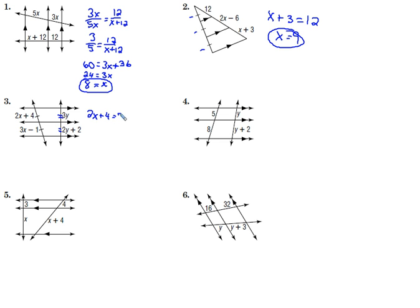2x plus 4 equals 3x minus 1. I want to subtract 2x from both sides and get x. I'm going to add 1 to both sides and get 5. x is 5.